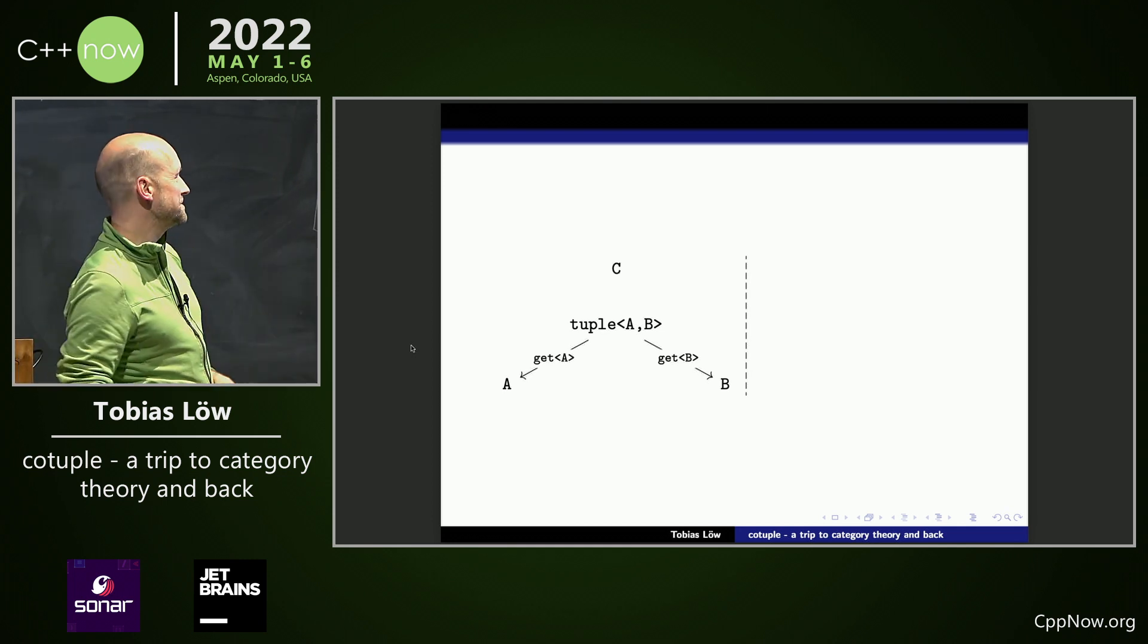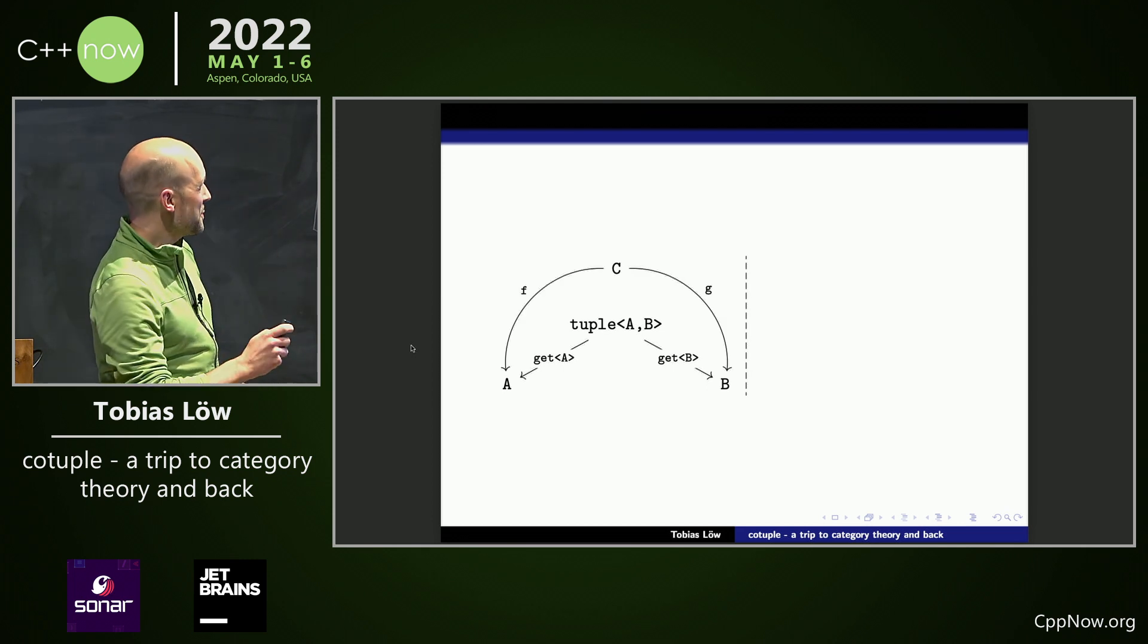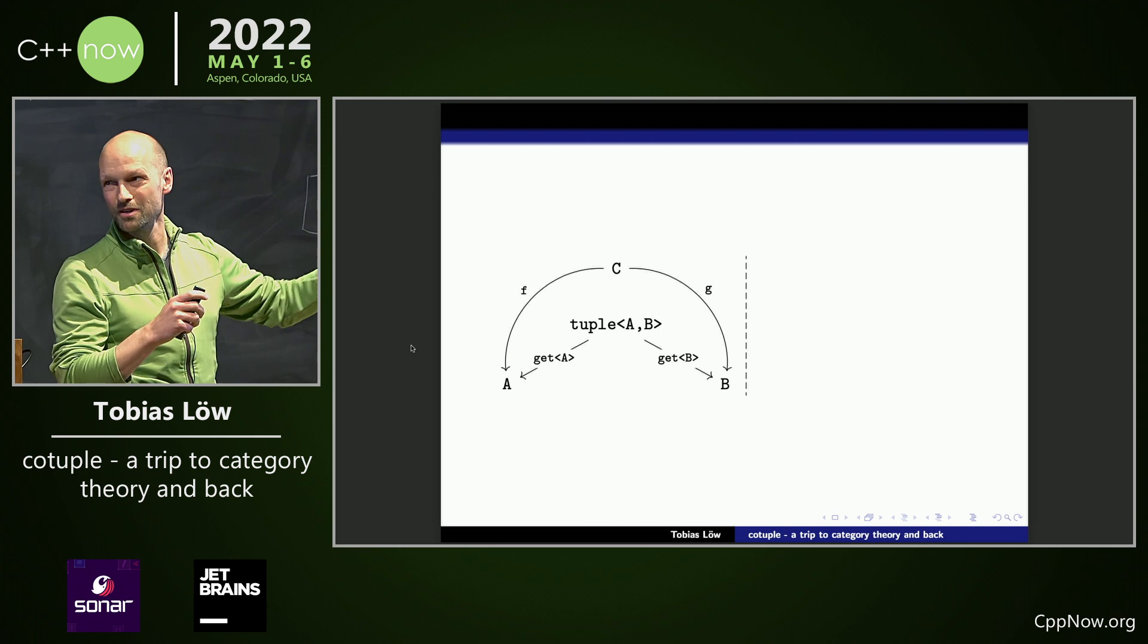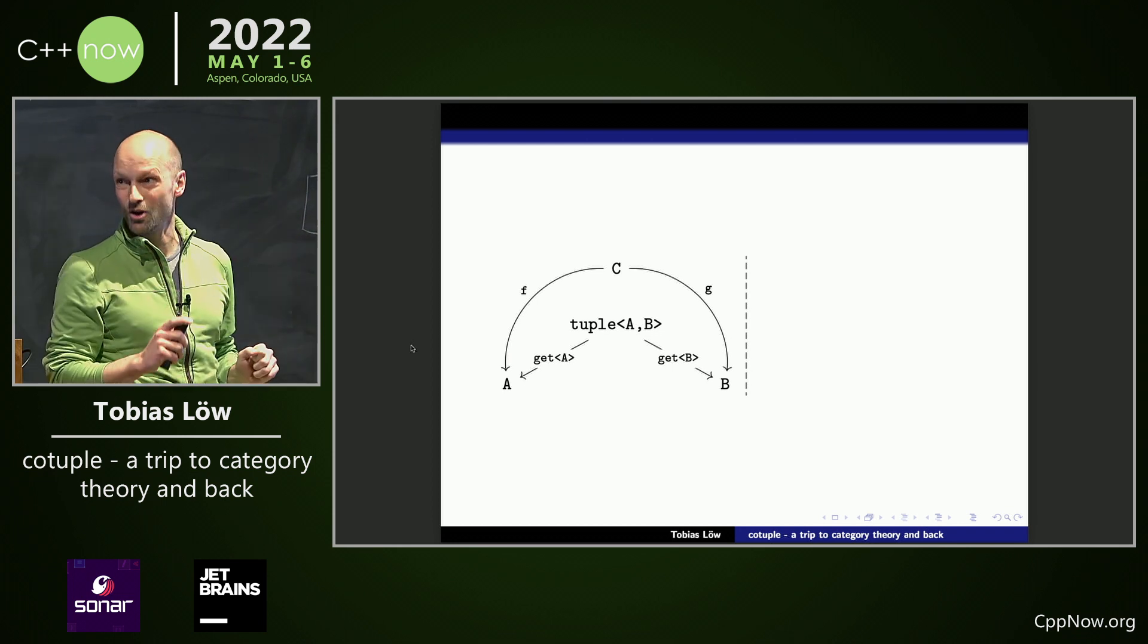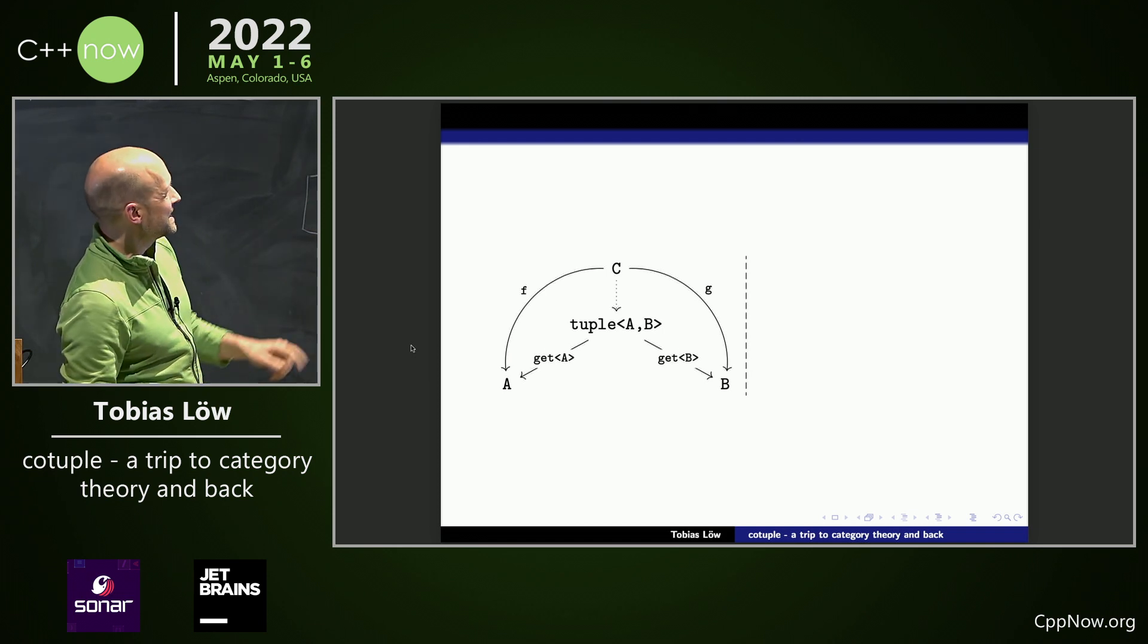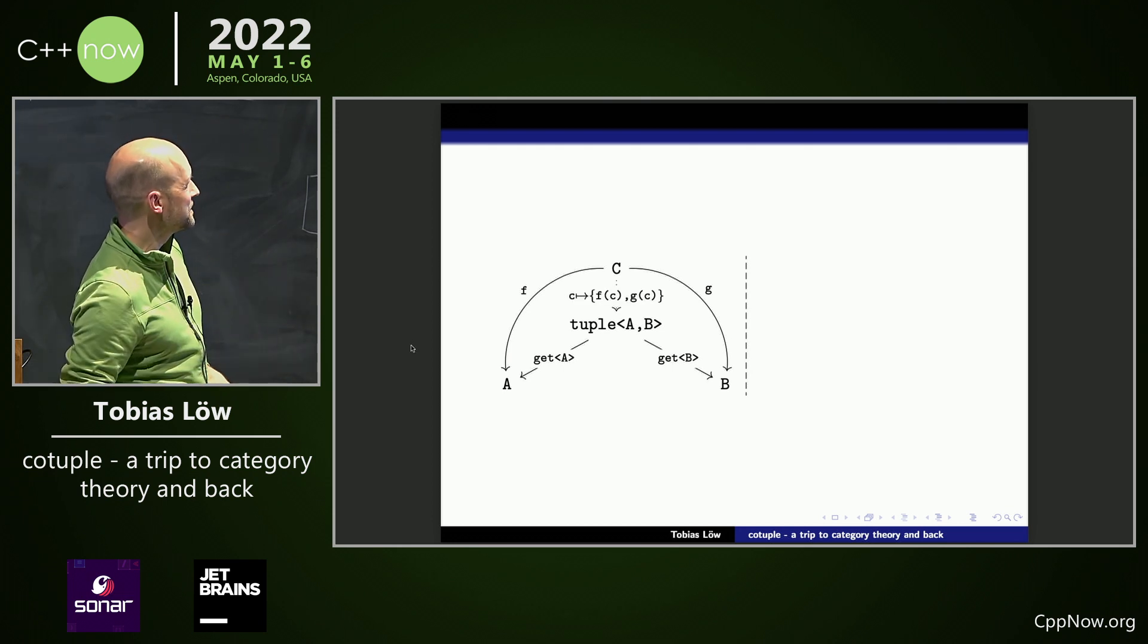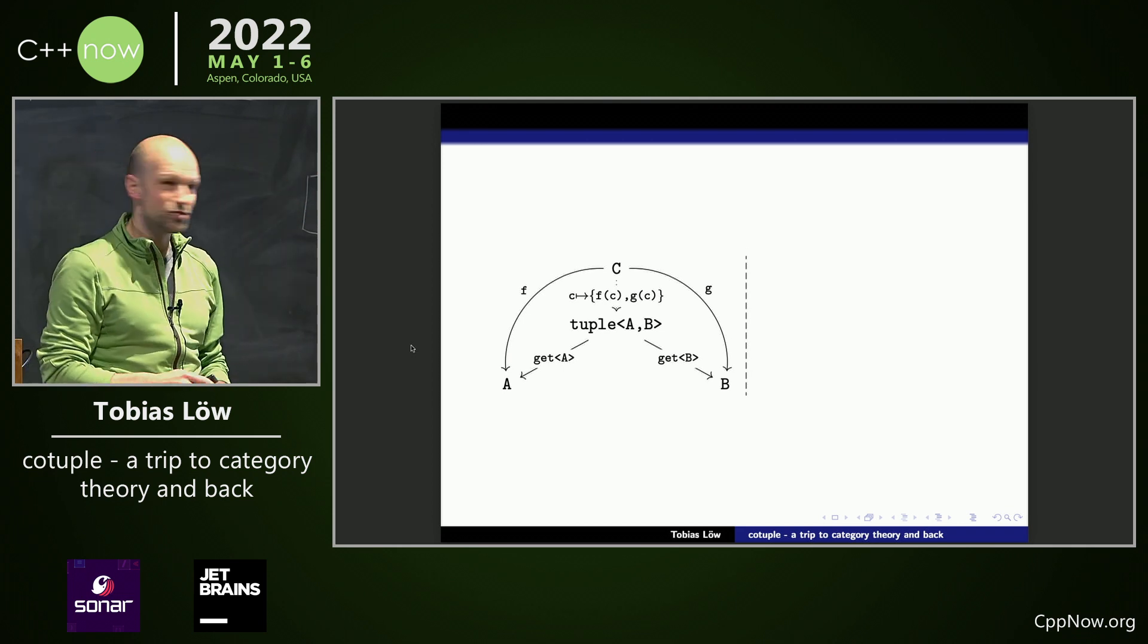Imagine we have another type C, and we have functions F and G going to A and B. Since tuple is a limiting cone, we get a unique function going from C to this tuple, making this whole diagram commute. And this is just mapping a C to the tuple FCGC.